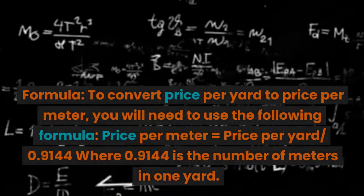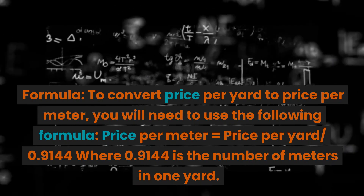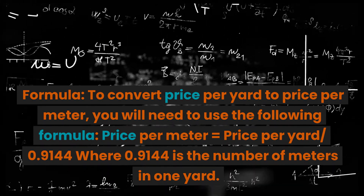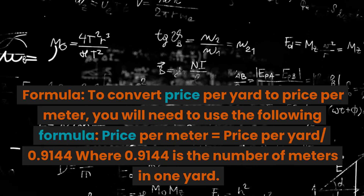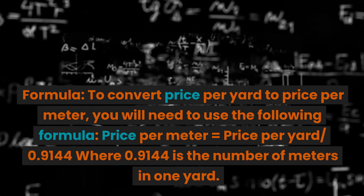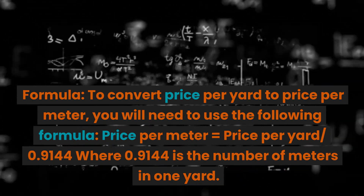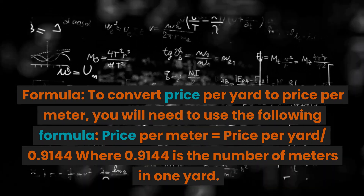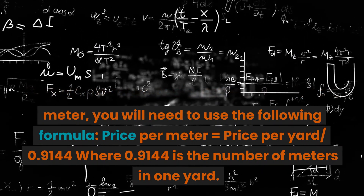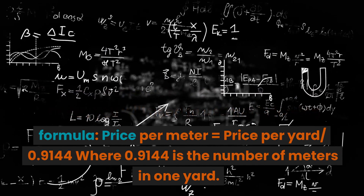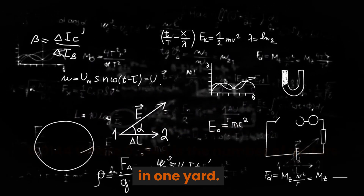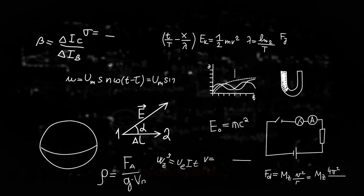Formula. To convert price per yard to price per meter, you will need to use the following formula: Price per meter equals price per yard divided by 0.9144, where 0.9144 is the number of meters in one yard.